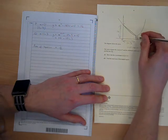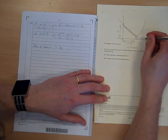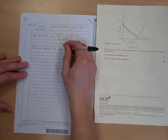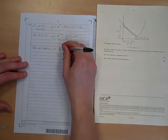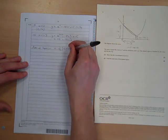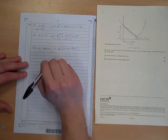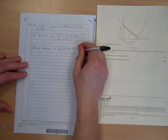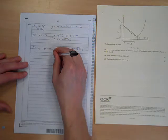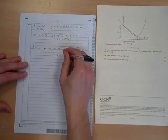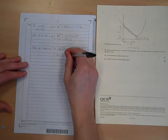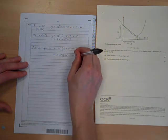That height is 24 minus 18ln3. So it's half times the sum of the parallel sides times the distance between them. So we've got a half ln3 times 40 minus 18ln3. There's our trapezium.